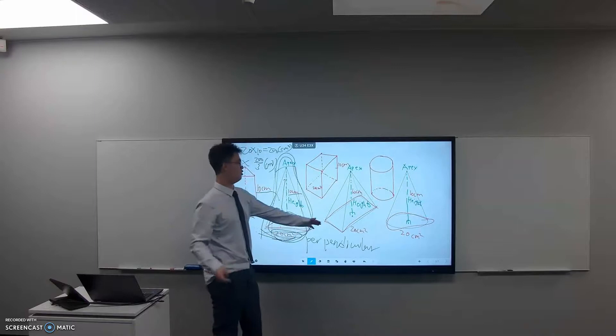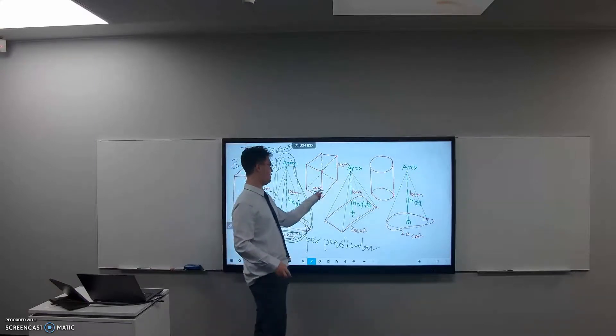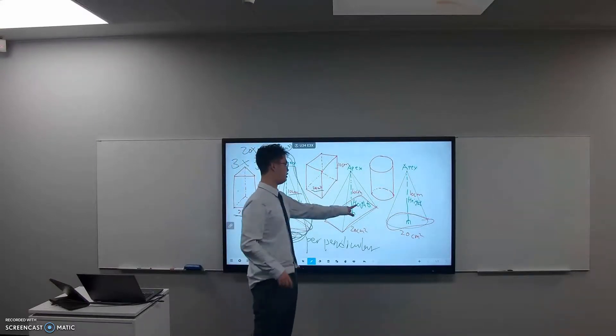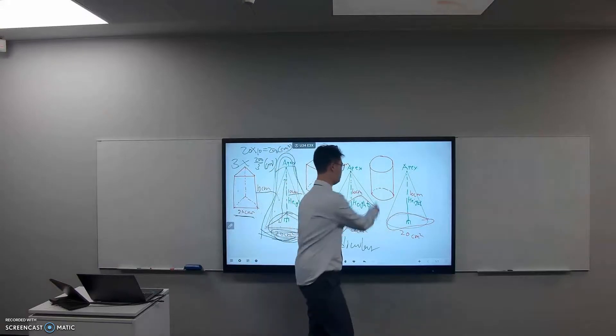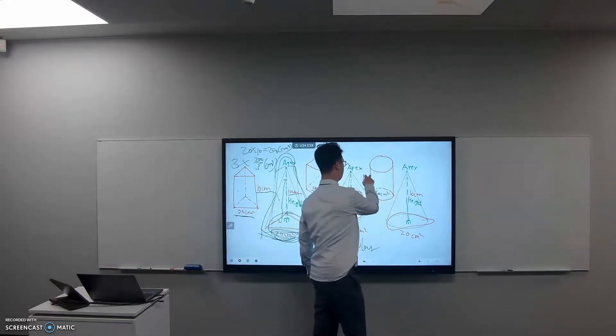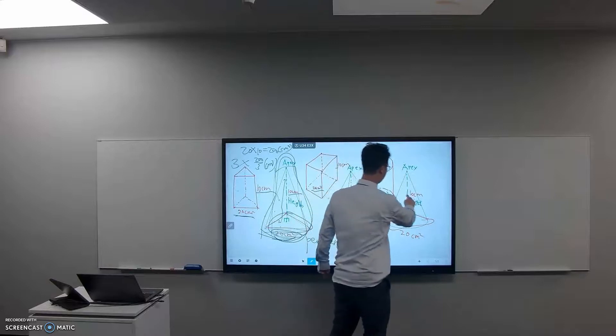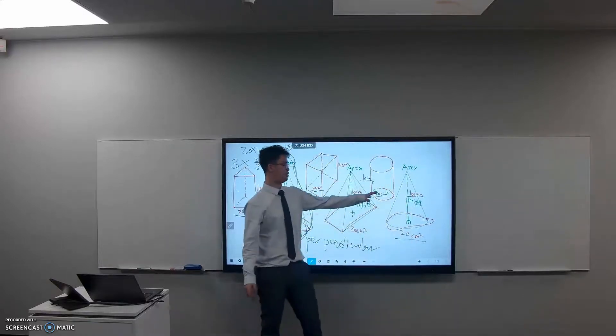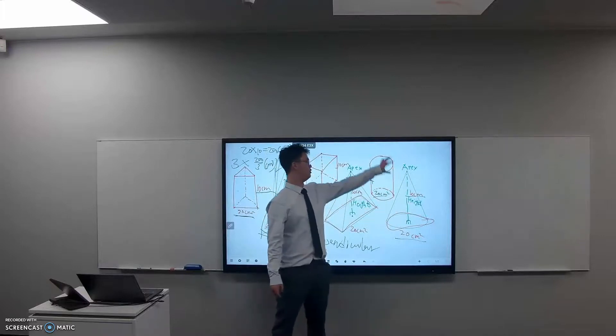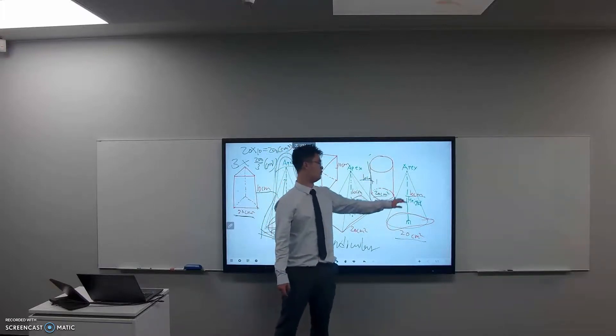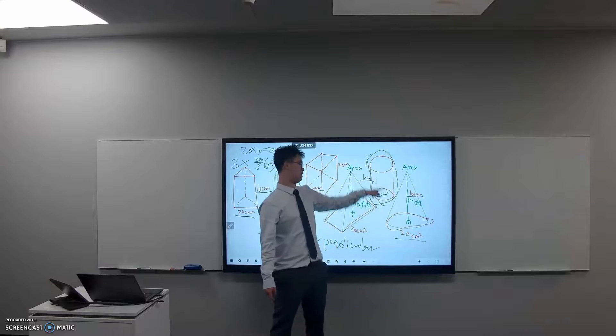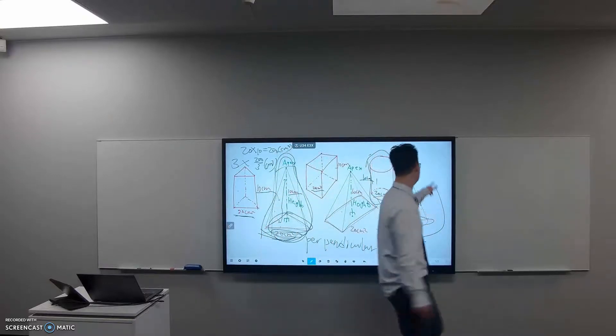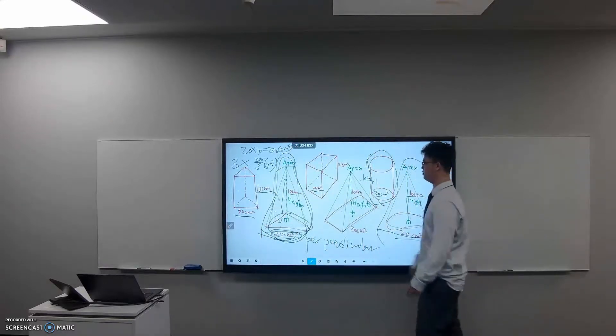And it's the same thing with this one. It's just a rectangular base. We do the same thing and divide it by three. So this one, they have the same height, same base area, same shape, and then we just calculate whatever the volume this one is and divide it by three, so we get the volume of this one.